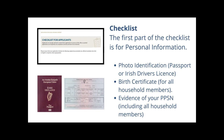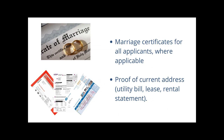The first part of the checklist is for personal information. This includes photo identification, which can be a passport or Irish driver's licence, a birth certificate for you and all the people who live with you right now, and evidence of your PPSN. This includes all of the people who live in the same household as you at the moment, and marriage certificates for all applicants where applicable.